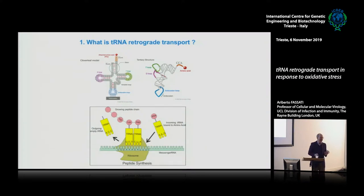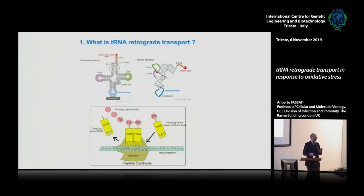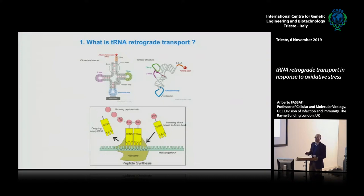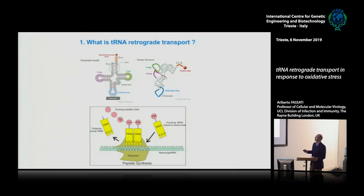To briefly summarize what tRNAs are: they are about 72 to 75 nucleotides, single-stranded short RNAs. In 2D structure they form the classical cloverleaf structure. There is a CCA end necessary for charging of the tRNA, so that the amino acid is linked to the 3' end through the CCA. This is the anticodon loop, where the triplet is recognized on the messenger RNA and the cognate amino acid is brought in by the tRNA.